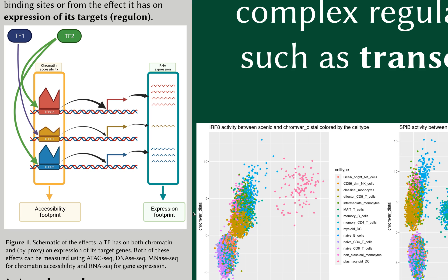To do this, we analyzed single-cell multiomic data published by 10x Genomics that consists of around 10,000 peripheral blood mononuclear cells with granulocytes removed by cell sorting. We estimated transcription factor activities using the chromatin accessibility data with the ChromeVar package and using the regulon expression with the SCENIC pipeline.